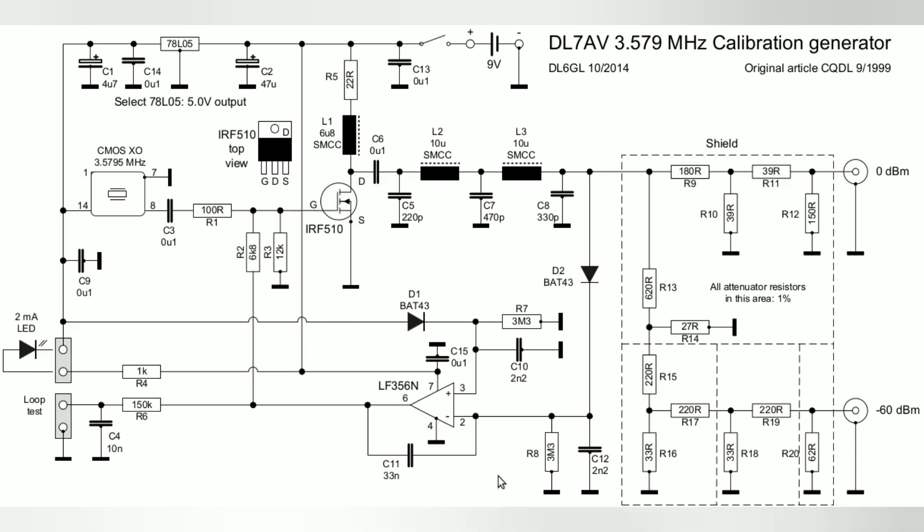The important part is this op amp here in the lower center section, which is used as a comparator to look at the 5 volts from the voltage regulator and a rectified version coming through from the RF, applying feedback to the gate of the RF 510 so it always stays exactly the same.